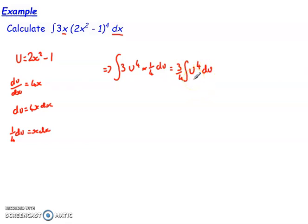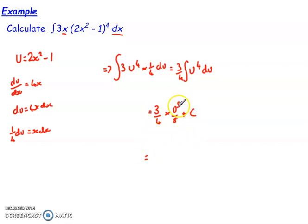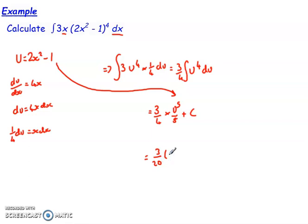That looks a lot more straightforward to integrate than before. If I integrate that, I get 3 quarters times u to the power of 5 over 5 plus c, my constant of integration. I simplify and substitute back in for u to get 3 over 20 times 2x squared minus 1 to the power of 5 plus c. There we go — we followed those steps, got rid of the more complex equation, substituted in terms of another variable, and then substituted back again at the end. This can apply for anything, not just powers but trig functions as well.